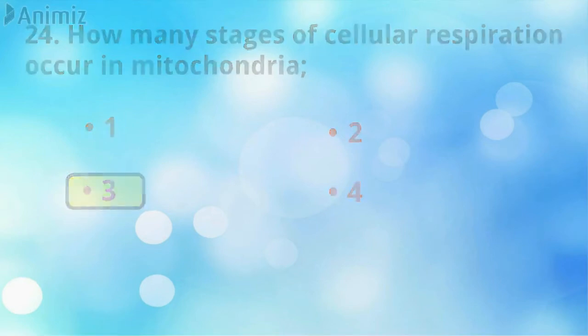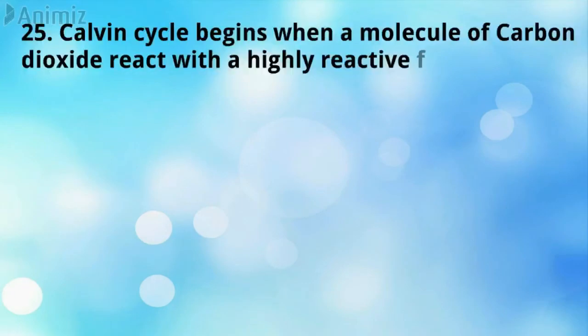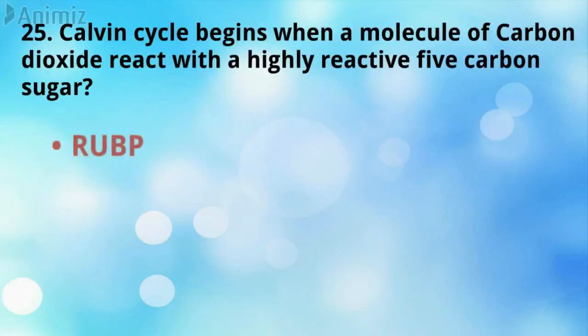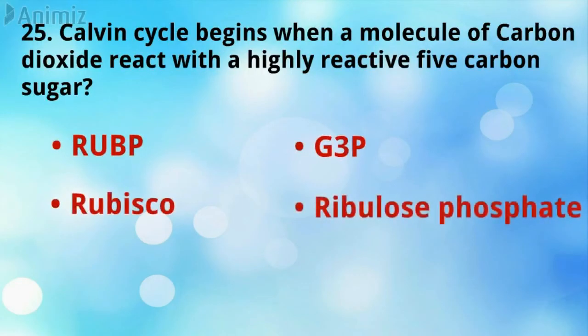The Calvin cycle begins when a molecule of carbon dioxide reacts with a highly reactive 5-carbon compound. 5 is the correct answer.